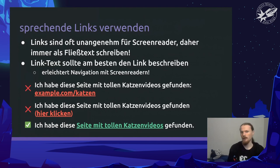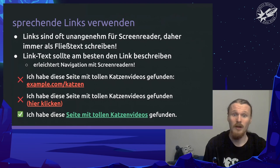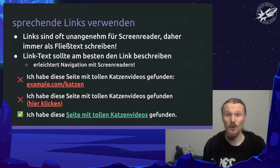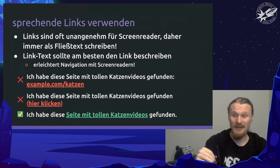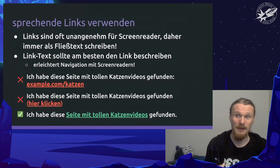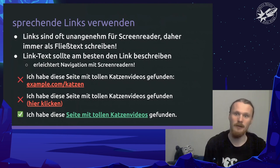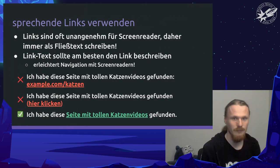The next thing that much too many social media networks don't do right is use links that speak for themselves. Links are often not great for screen readers because if random numbers and letters are in the link, it's really hard to listen to. It's very important that the link is replaced with a text that accurately describes the content of the link. If a screen reader reads across a page with a lot of links and the links are self-explanatory, then you understand what is linked. Ideally, use descriptive text like 'page with great cat videos' and link that sentence rather than just the URL or 'click here'.